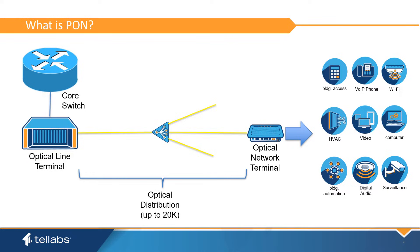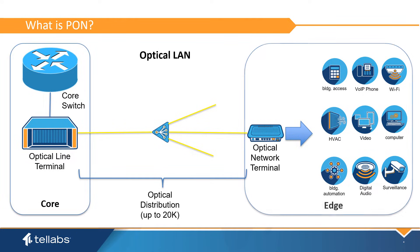PON, or passive optical network, is a data transfer technology that is used to provide connectivity in the enterprise LAN. The LAN that uses PON is referred to as optical LAN. The optical LAN solution relies heavily on fiber optics to provide data connectivity from the core of the LAN to the edge, with no electronic components in between. For this reason, PON can provide many benefits to the enterprise LAN.